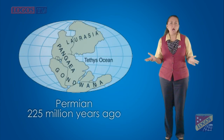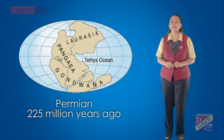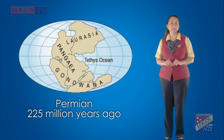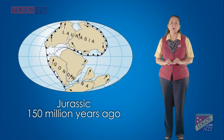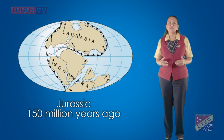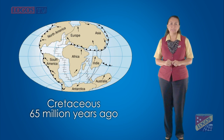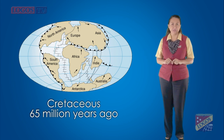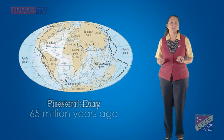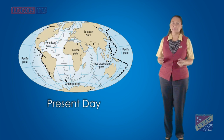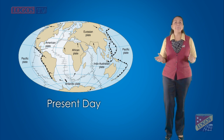The movement of the continents is one factor affecting the distribution of organisms on the earth. The continents were part of a huge block of solid rock called Pangaea. Scientists have found that the plates have been moving very slowly for millions of years in a process called continental drift. Continental drift has caused a big impact on the distribution of species.